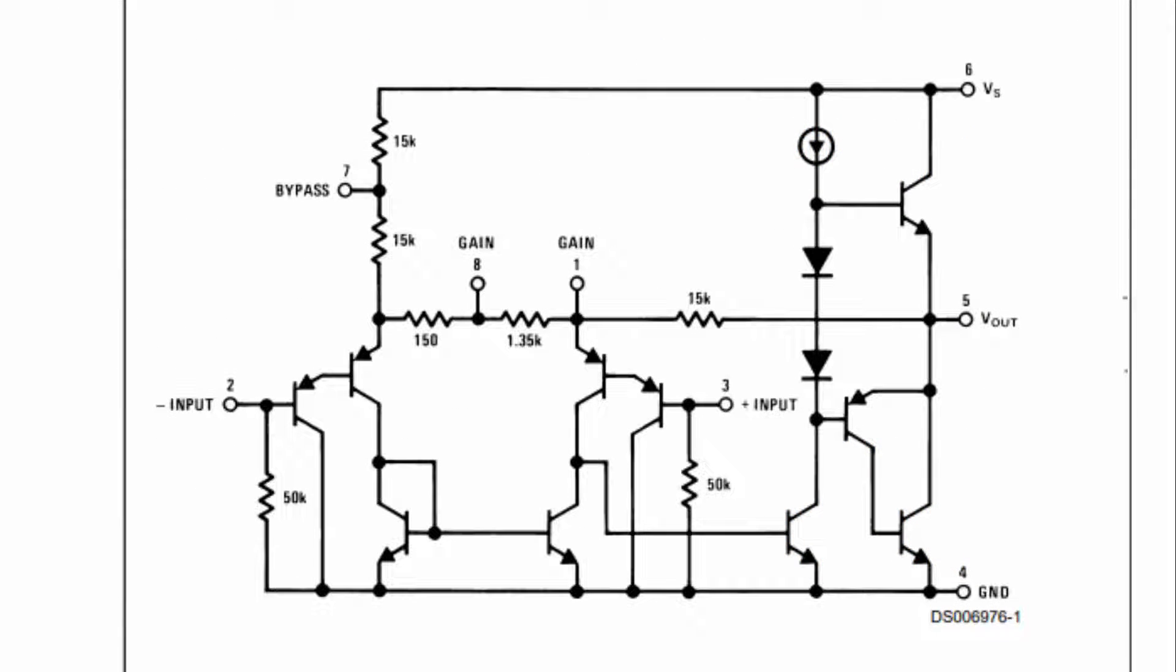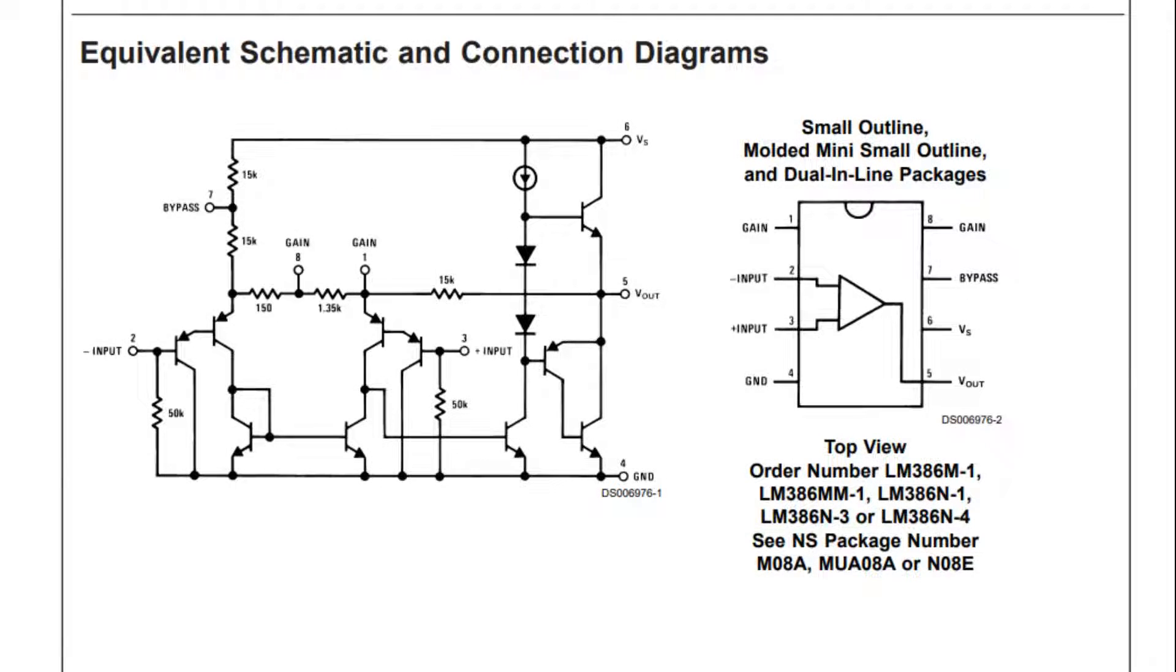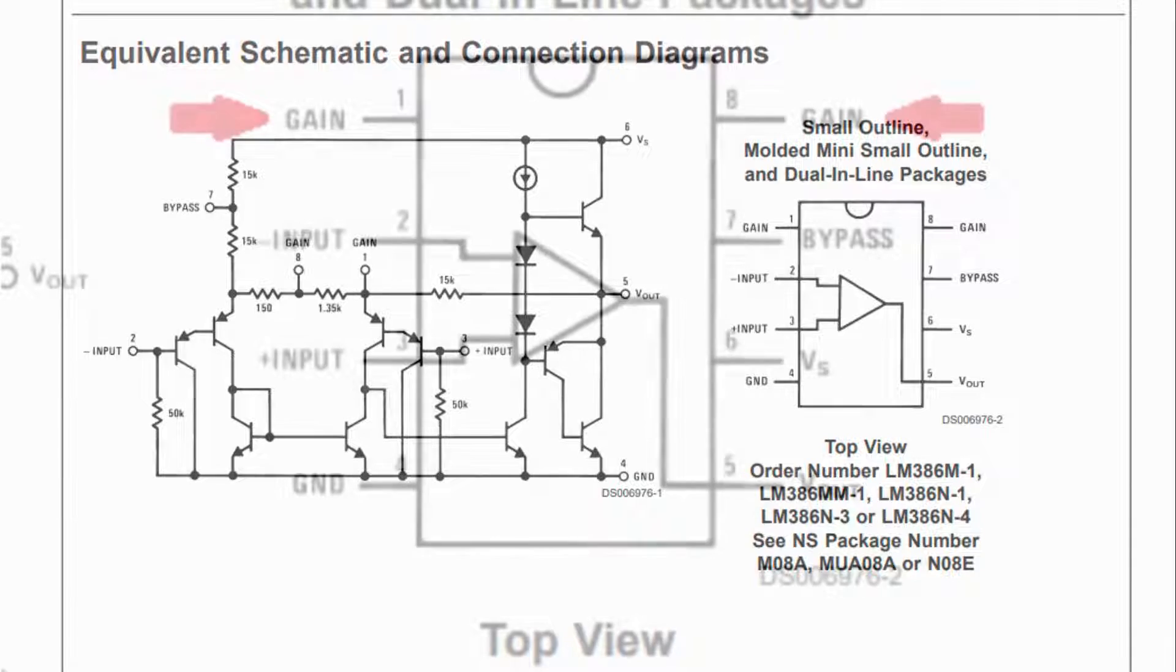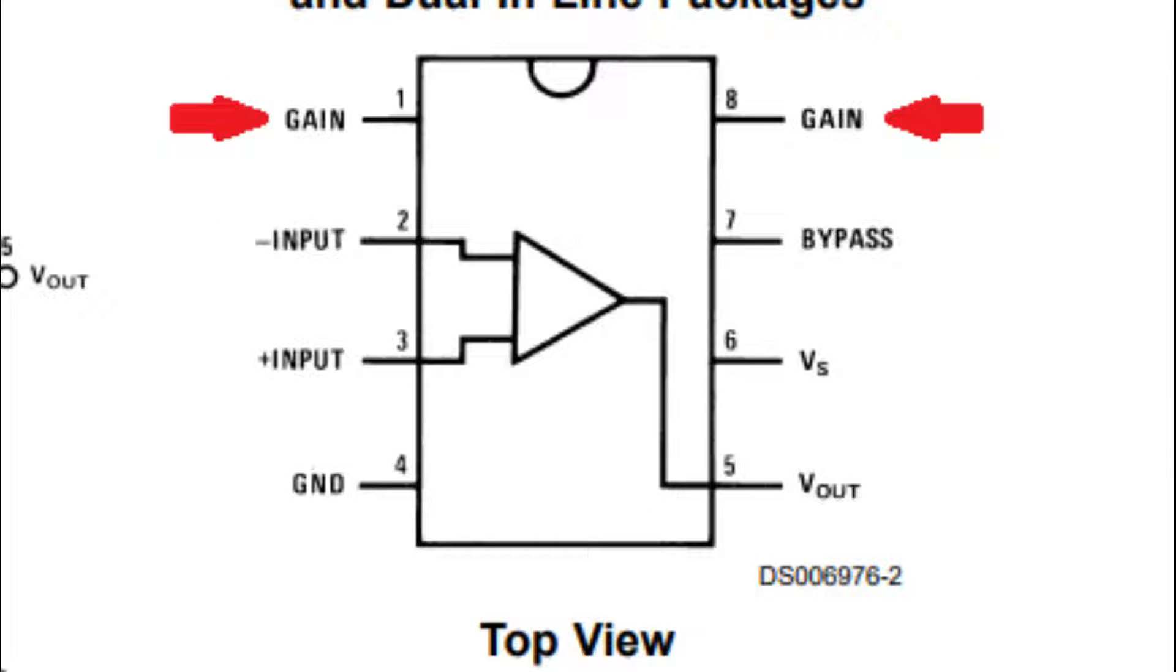Here is the equivalent schematic of what is going on inside this op amp. Now you can see the pinout of the LM386 here on the right. Pins number 1 and 8 both work together, so I'll talk about those later on in the video.